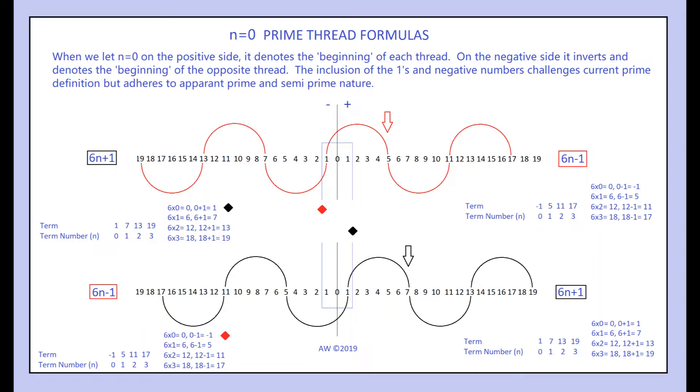Because 7 uses the 6n plus 1 formula, we get 1 as the answer because 6 times 0 is 0 and 0 plus 1 is 1.